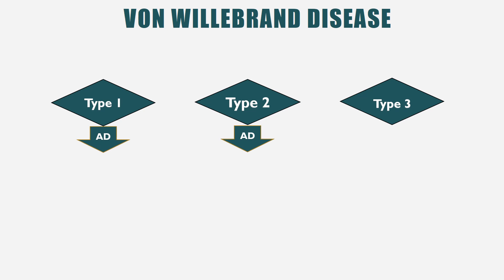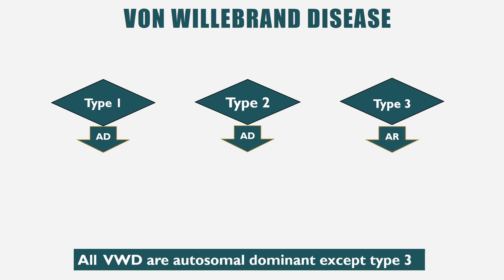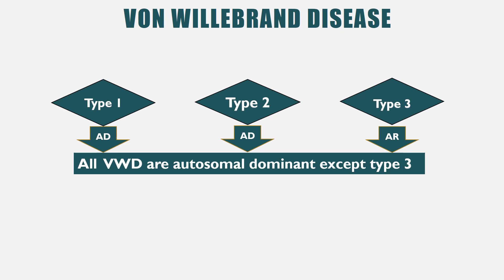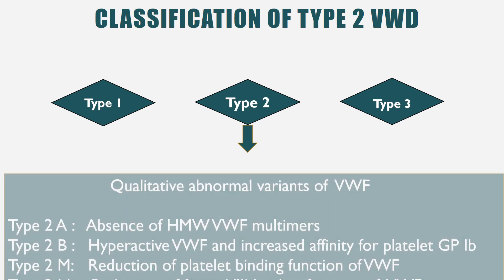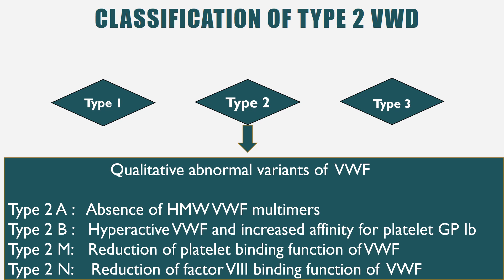Types 1 and 2 are autosomal dominant, while type 3 is autosomal recessive — so all von Willebrand disease types are autosomal dominant except type 3. Type 2 is further classified into four subtypes: 2a, 2b, 2m, and 2n. In type 2a there is absence of high molecular weight vWF multimers; in type 2b there is hyperactive vWF with increased affinity for platelet glycoprotein 1b; in type 2m there is reduction of platelet binding function; and in type 2n there is reduction of factor VIII binding function.